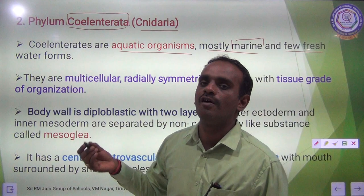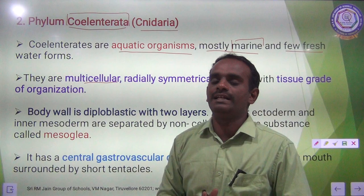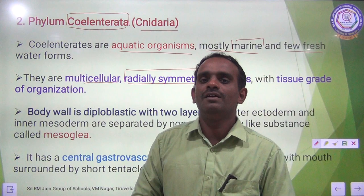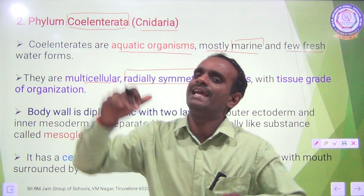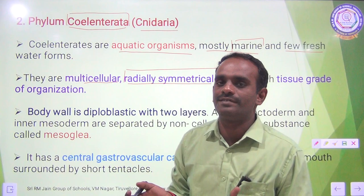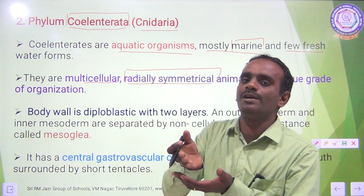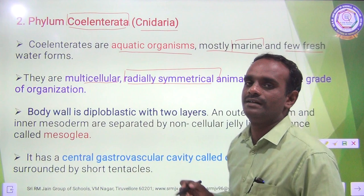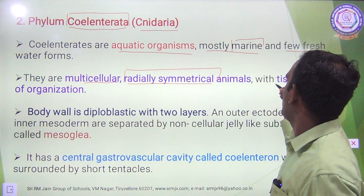They are multicellular organisms. Radially symmetrical means if we cut the body parts of the organism through the central axis in any direction, we can get equal identical halves — that is called radial symmetry. The organisms are multicellular, radially symmetrical, and with tissue grade of organization.